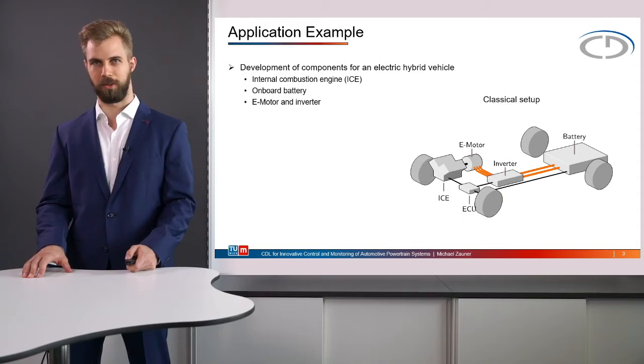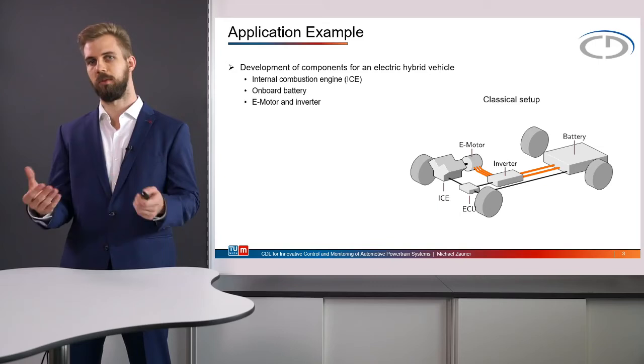We can group the components needed for such a vehicle into three parts. First, the internal combustion engine. Secondly, the on-board battery. And a group connecting those two components together would be a combination of electric motor and inverter.